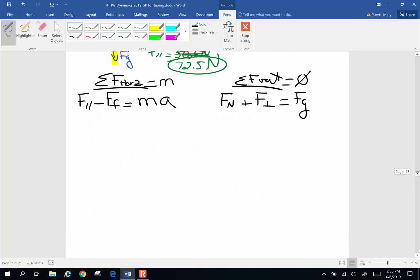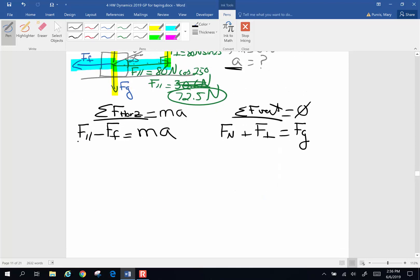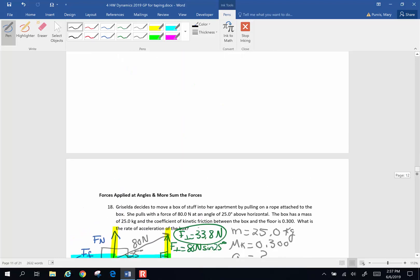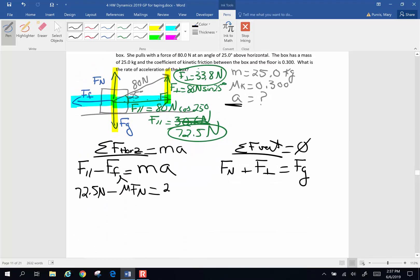We put in numbers where we have them and we solve. Force parallel is 72.5 newtons. Force of friction is mu times normal force. Mass is 25 kilograms, and I'm looking for rate of acceleration A. So 72.5 newtons minus 0.3 times normal force equals 25 kilograms times A. One equation, two unknowns: normal and A. I stop and go to the other side because I run out of stuff I can plug in.